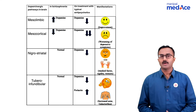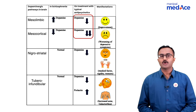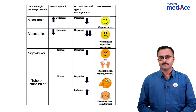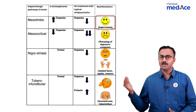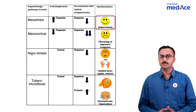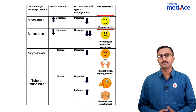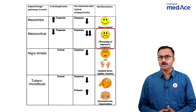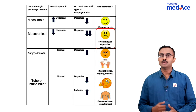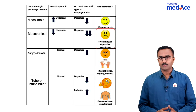But on giving antipsychotics — typical antipsychotics — it causes non-selective blockade. So we have improvement of positive symptoms while acting on the mesolimbic system, and worsening of depressive symptoms while acting on the mesocortical pathway.